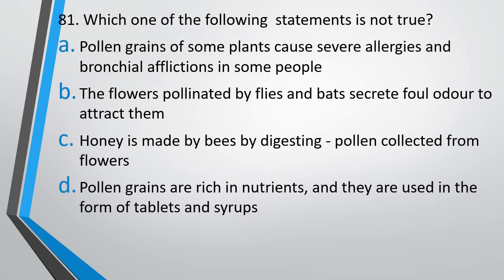Question number 81: Which one of the following statements is not true? (A) Pollen grains of some plants cause severe allergies and bronchial afflictions in some people. (B) Flowers pollinated by flies and bats secrete foul odour to attract them. (C) Honey is made by bees by digesting pollen collected from flowers. (D) Pollen grains are rich in nutrients and are used in the form of tablets and syrups. The correct answer is Option C — honey made by digesting pollen collected from flowers is an incorrect statement.